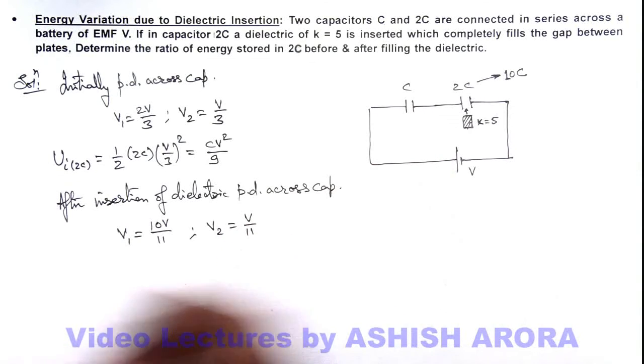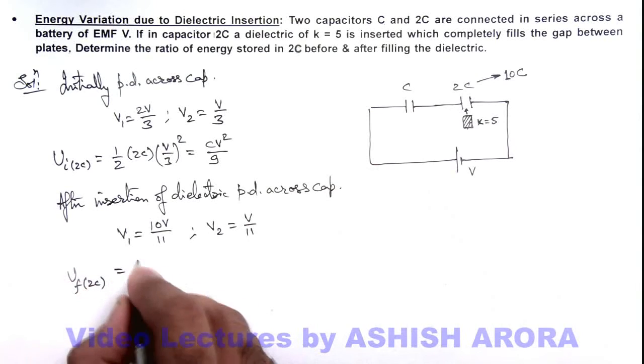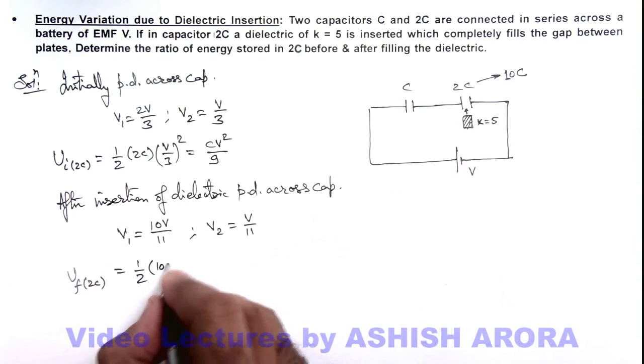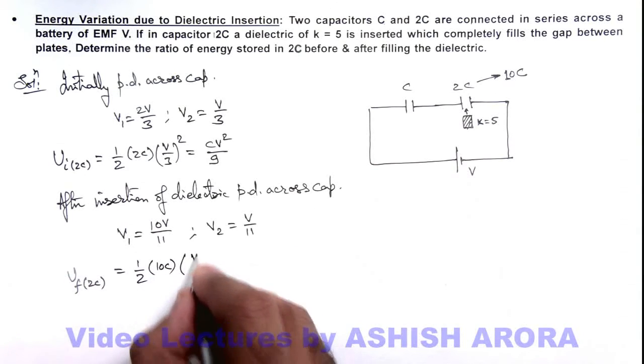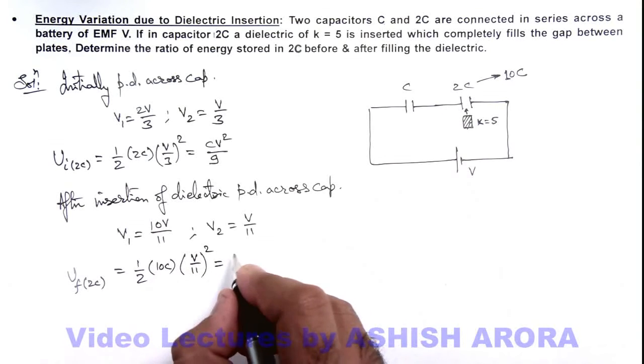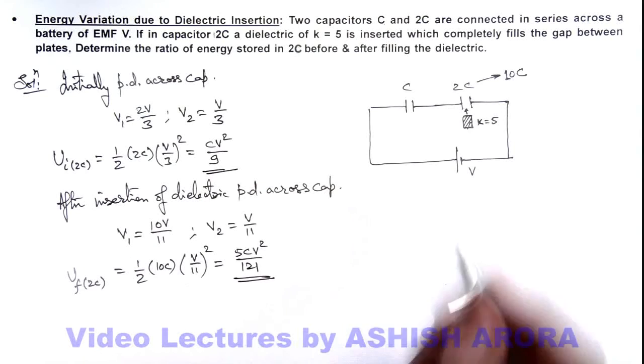So in this situation the final energy stored in 2C capacitor can be given as half, the capacitance changes to 10C and the potential difference is V by 11 whole square. So this will give us 5CV square by 121. This is the final energy stored, this is the initial energy stored.